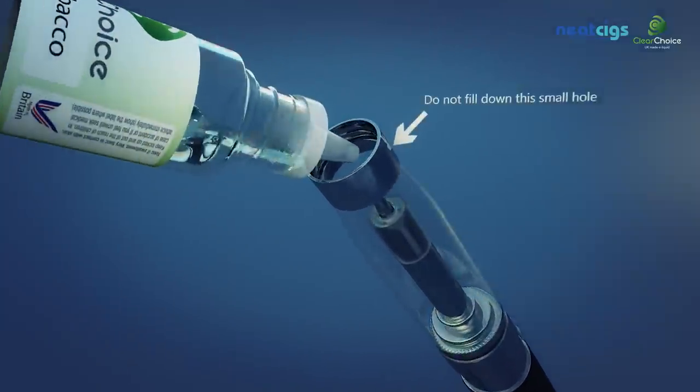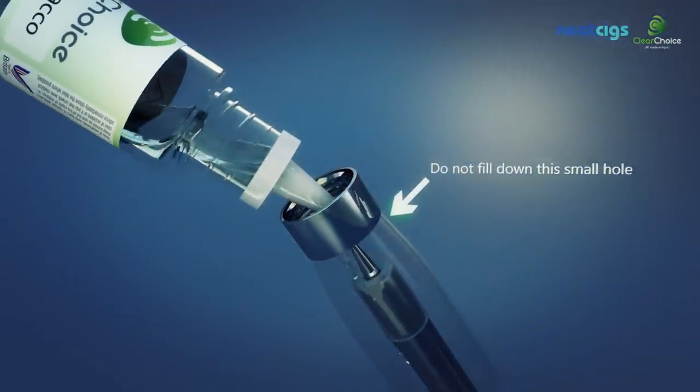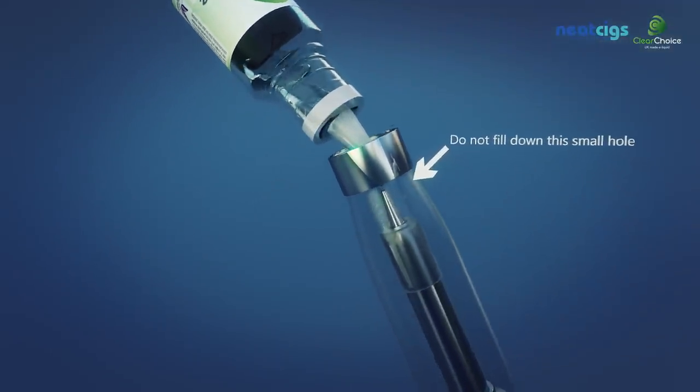To fill the Revo, you'll need to remove the mouthpiece by unscrewing it. You will then need to fill the Cartomizer a third of the way full.